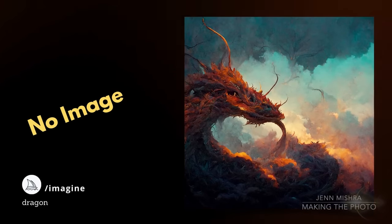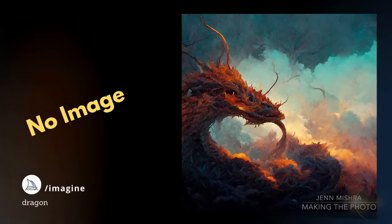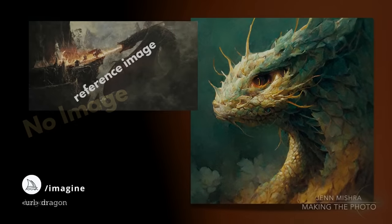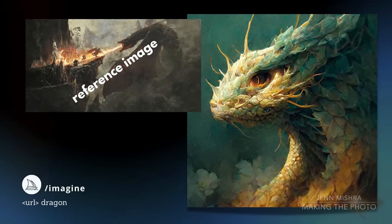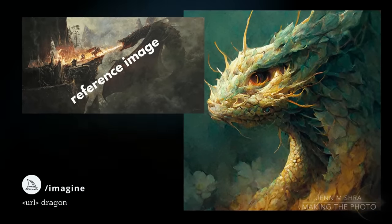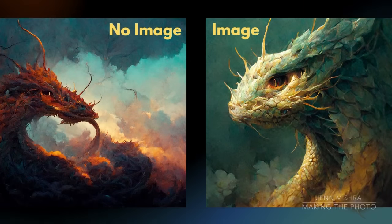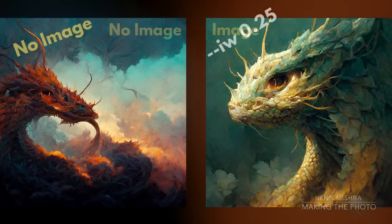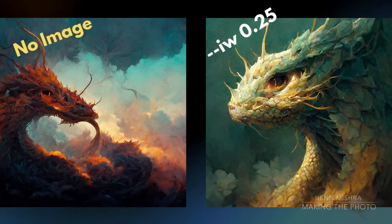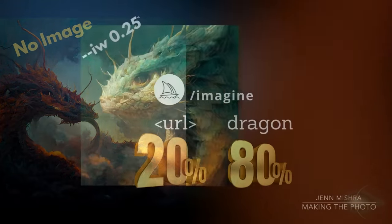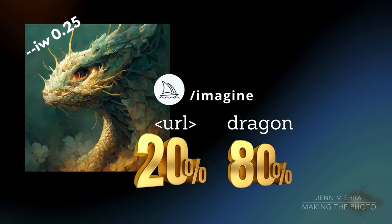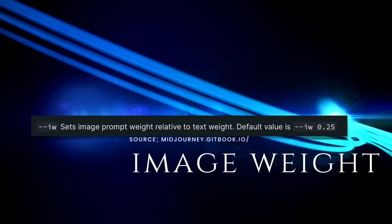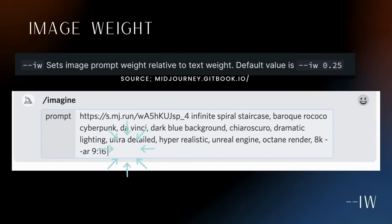Elements from your image will work with the written prompt — Midjourney uses the image as inspiration. If I add an image by a popular artist, the Midjourney dragon becomes more detailed. The image makes a difference, but not a huge difference. That's because the default image weight in Midjourney is 0.25. Practically, this means your image is weighted about 20% and your text prompt is weighted about 80%. Image weight, or IW, is a parameter that tells Midjourney how much you want the image to affect your results.